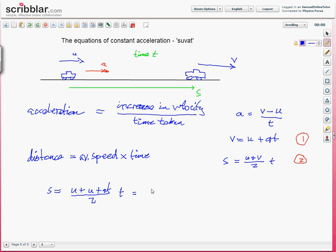This equals, so on the top now we have u plus u, so that's 2u, plus at, multiplied by the t, so I put that in there t and t squared. This gives us equation 3, s equals ut plus half at squared, equation 3.